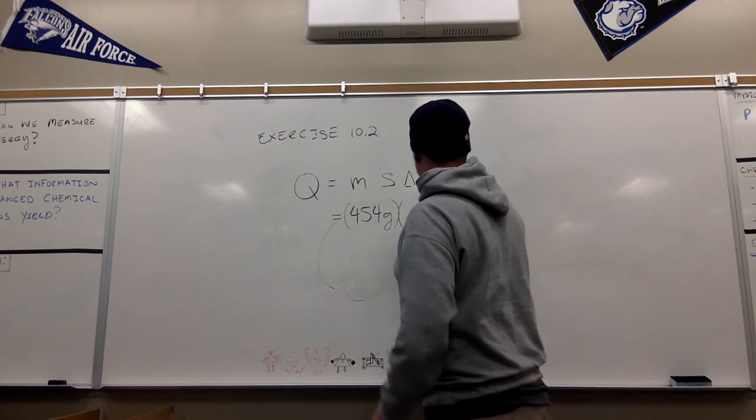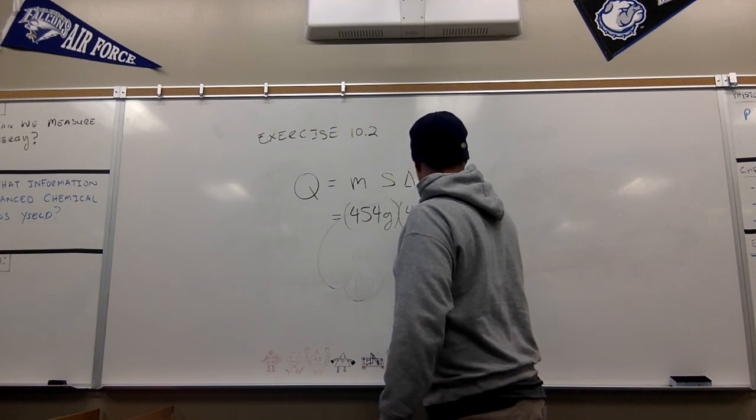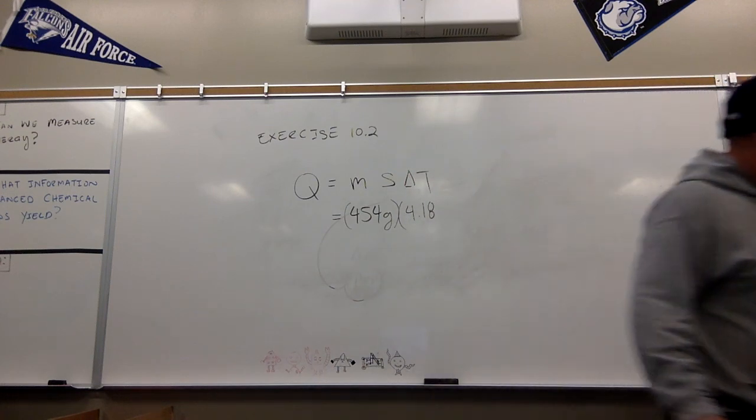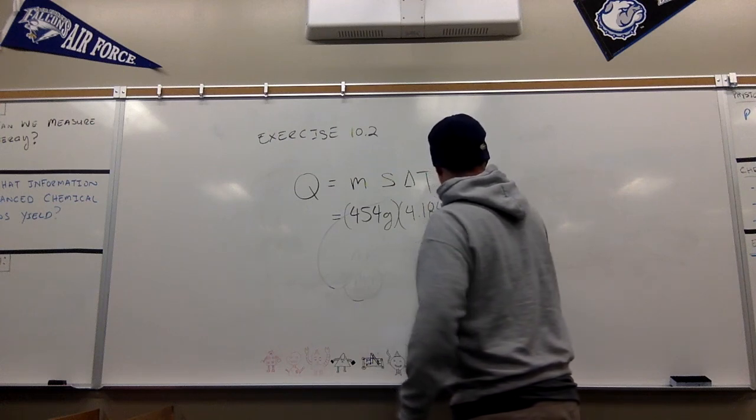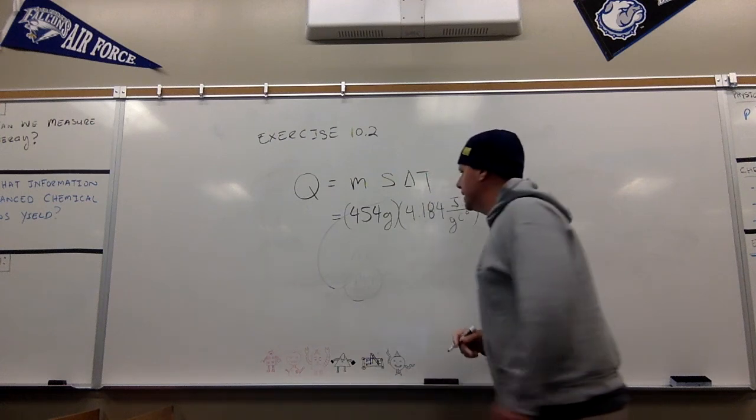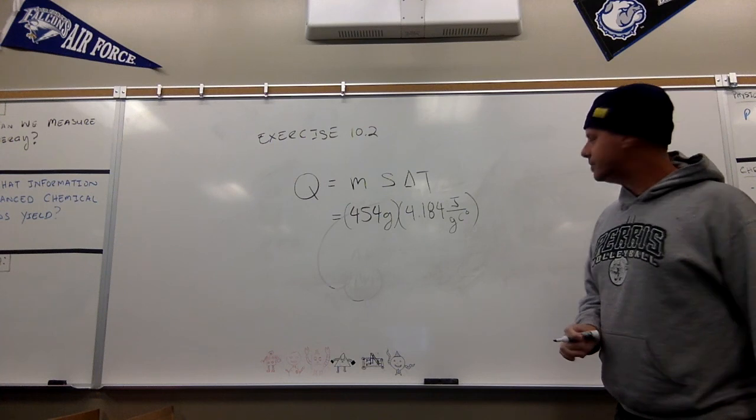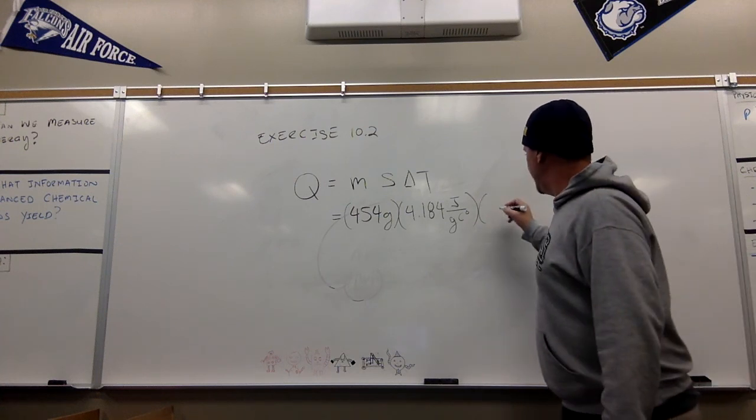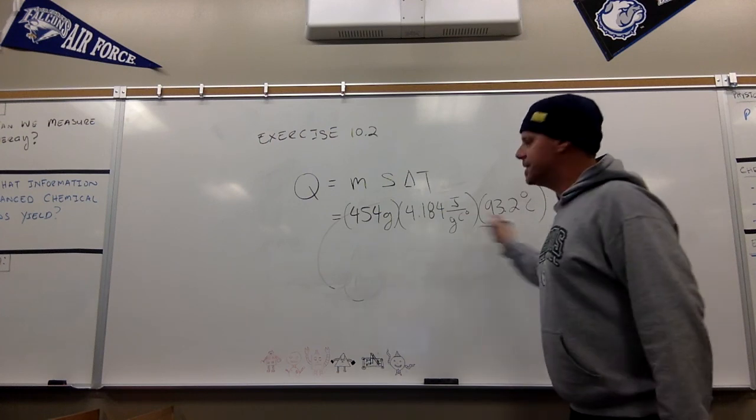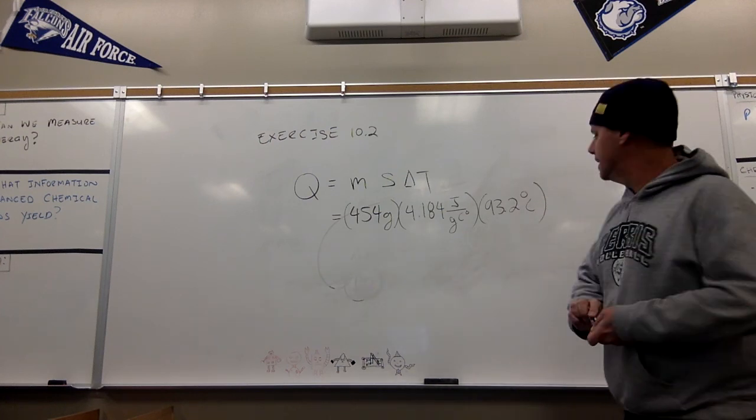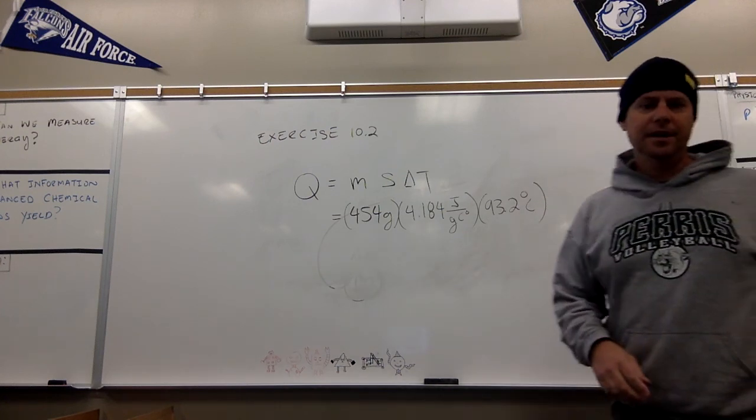So that's 4.18. I think this book uses 4. Yeah, 4 joules per gram Celsius. Quite a party unit there. Multiplied by the 93.2 degrees Celsius temperature change that we calculated in the last step.